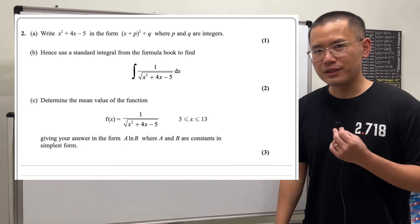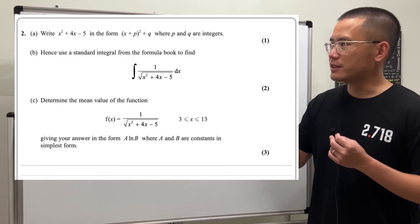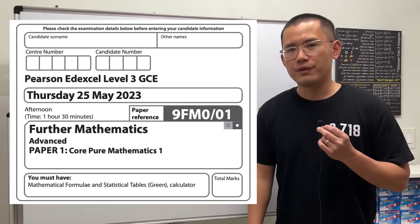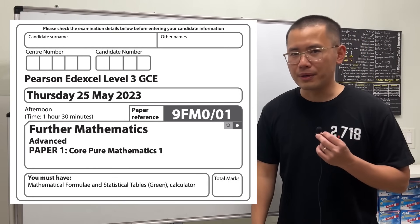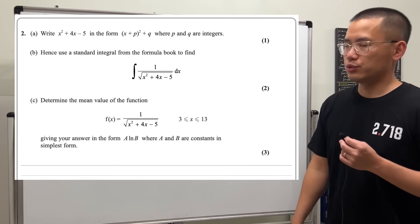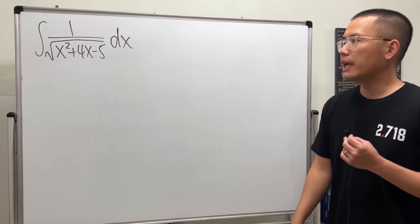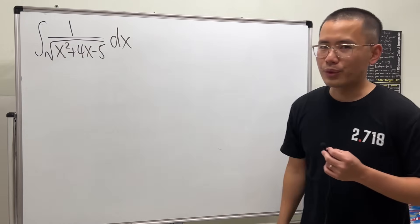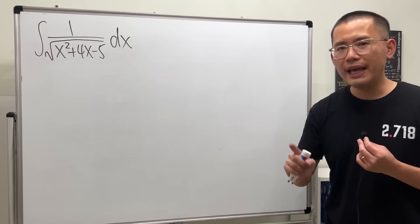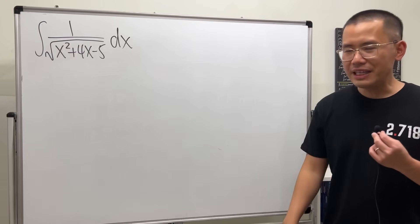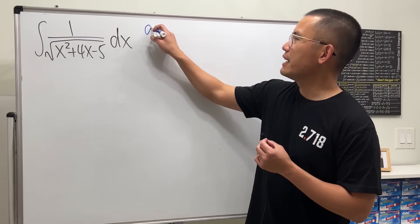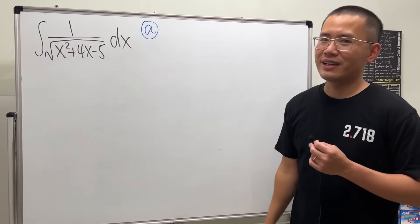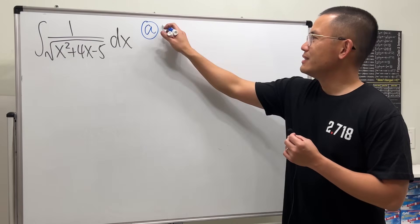My goal for this video is to help you understand how to solve this question from the 2023 A-level math paper. This test question has three parts, and the main thing is that we need to know how to solve this integral. The good thing is that for part A, they give us the biggest hint: we have to complete the square of this quadratic. So let's write that down right here.